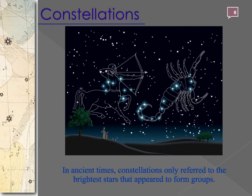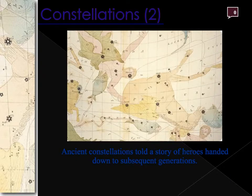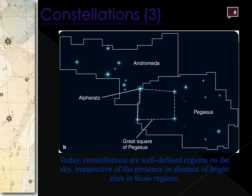In the past, constellations were differentiated from background stars by being the brightest stars in the sky, and they often told stories passed down through generations. Today, we refer to constellations as specific regions of sky, so you would know exactly where a star is if we said which constellation it is in.